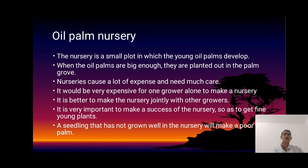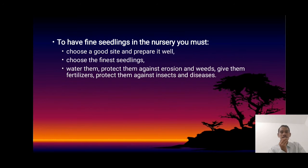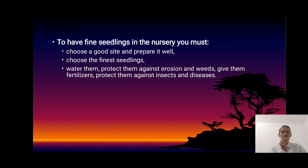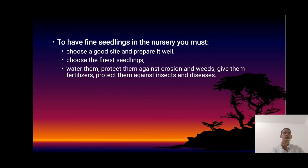The nursery is the place where we take care of young oil palm seedlings. The better the oil palm seedling, the better the yield that we get. To have good seedlings in the nursery, you must choose a good seedling and prepare it well. Choose the finest seedlings and water them. Protect them against pests and disease. We must take care of seedlings very well against many types of disease and insects.